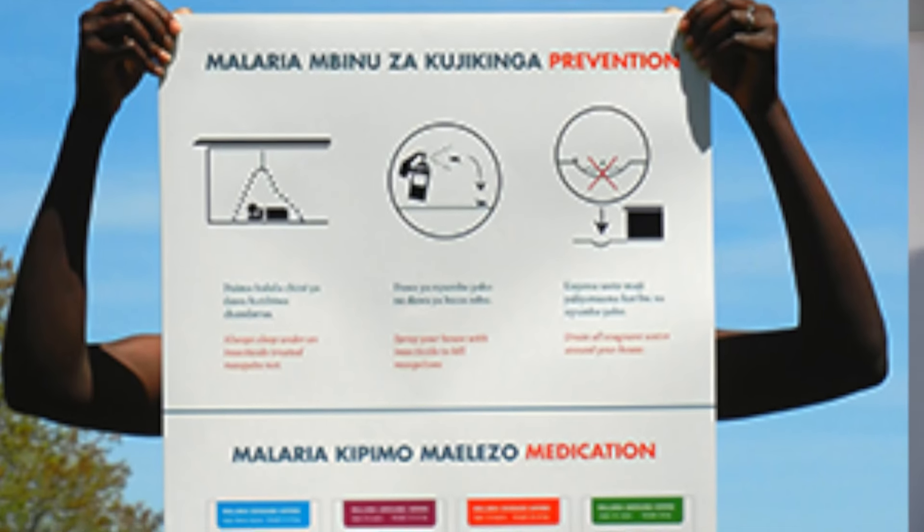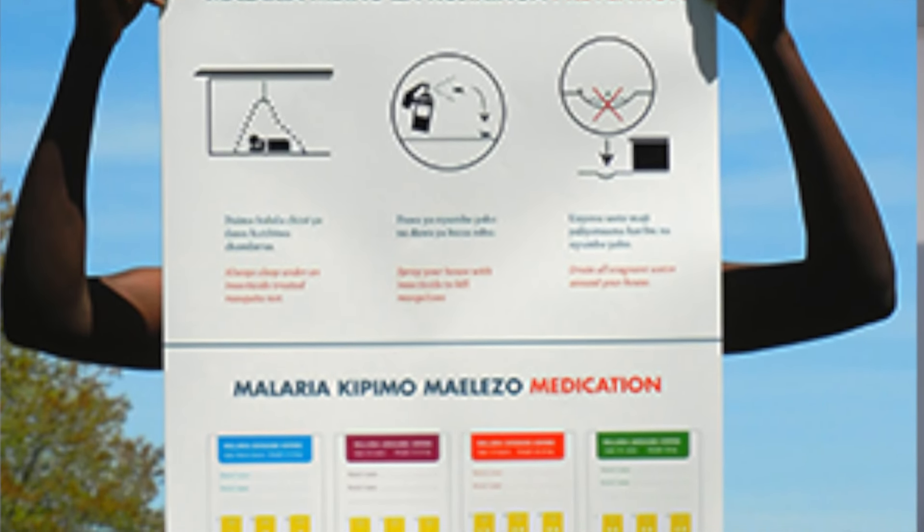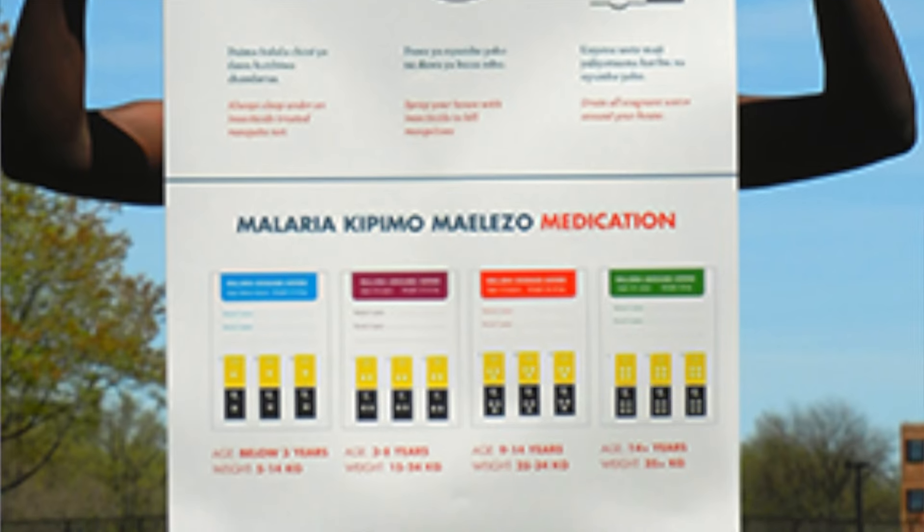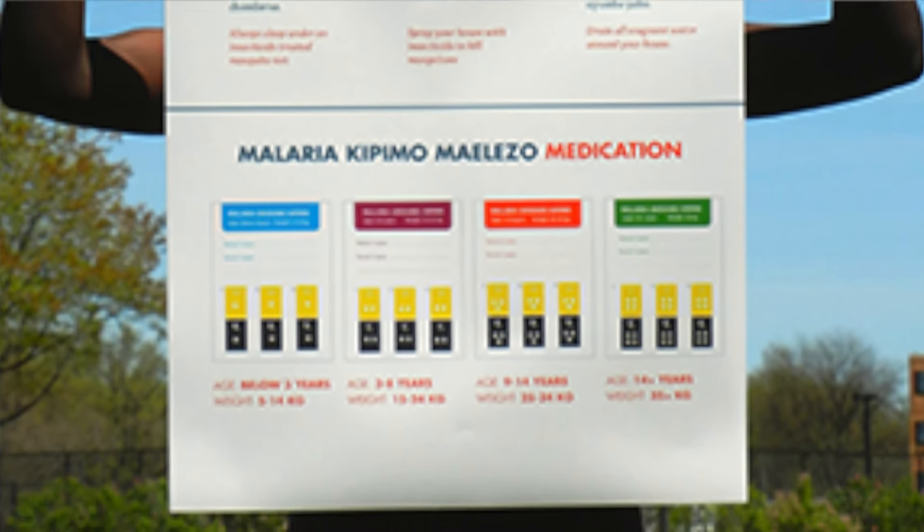The first piece of success was coming up with a body of work that was usable in the field — doctors and clinical workers said it was as close as they had hoped for. The next phase of success is ongoing, as the work is in the field and we're starting to understand if the numbers of people infected with malaria or getting treatment are changing. If we see changes in those numbers hopefully based on what we came up with, that will be success, but it's going to take time to collect the data.